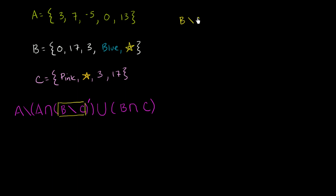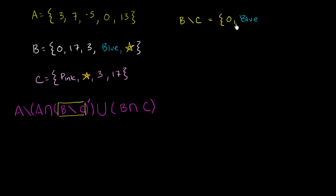The relative complement of C in B, or B minus C, is all the stuff in B with all the stuff in C taken out. B has a 0 — C does not have a 0, so we keep the 0. B has a 17 — C has a 17, so we take it out. B has a 3 — C has a 3, so we take that out. B has a blue — C does not have a blue, so we leave the blue in. B has a gold star — C also has a gold star, so we take it out. The relative complement of C in B is the set containing 0 and blue.